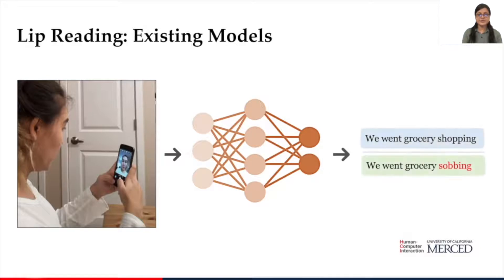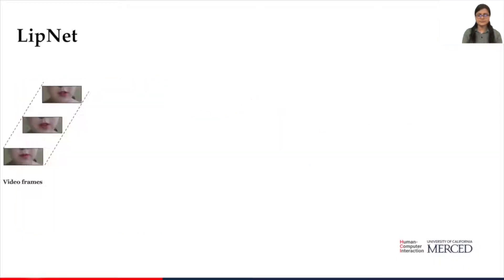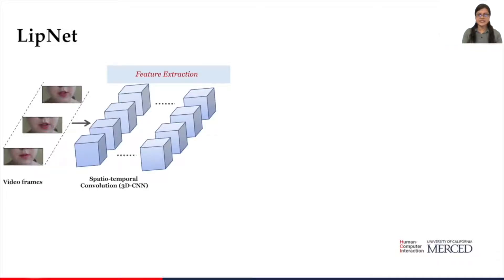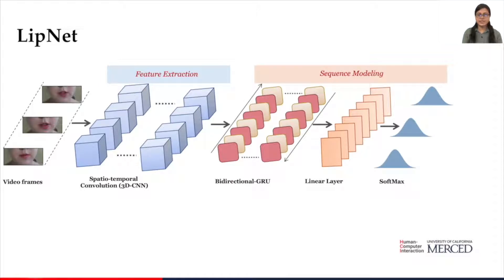Existing lip reading systems either use external sensors or process lip movements to understand what the user is speaking. However, these systems are slow and error-prone. LipNet is the most widely used end-to-end model for phrase-level lip reading that maps a variable-length sequence of video frames to text by making use of a deep 3-dimensional CNN, 2 bi-directional GRUs followed by a linear softmax layer, and a CTC loss.